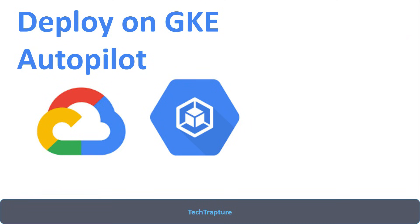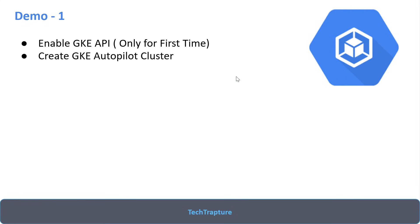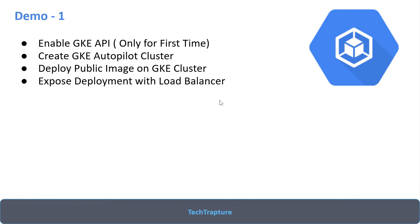Hello all, welcome to TechTapture. This is our second demo on deploying an application on a GKE Autopilot cluster. In our previous video, we enabled the GKE API, created an Autopilot cluster, deployed one public image on the GKE cluster, then exposed the deployment with a load balancer as a service.